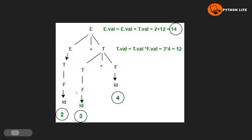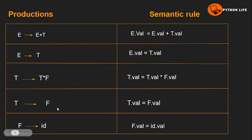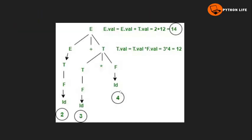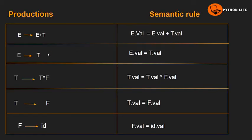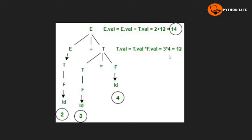For the first identifier, id value is 2, so F dot value equals id dot value equals 2. Then T tends to F, so T dot value equals F dot value equals 2. Then E tends to T, so E dot value equals T dot value equals 2. The left-side E dot value is 2.